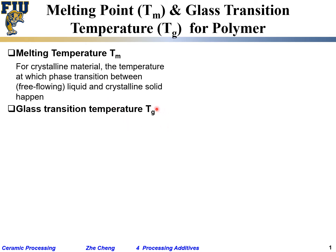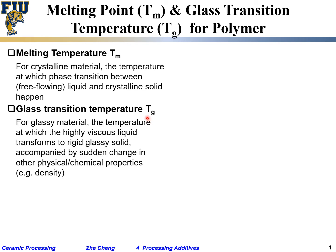Glass transition temperature is typically for materials that can form glass. It is a transition temperature between a highly viscous liquid and a rigid glassy solid. Rigid means the material is like a typical glass — brittle. Glassy means it is non-crystalline, amorphous; the atoms or molecules packed in it are not in translational periodicity.